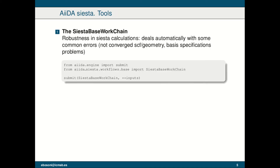This is, however, not the only feature of our plugin. In fact, we provide some tools that we think can be useful for anyone who wants to use SIESTA. The first one is the SiestaBaseWorkChain that adds robustness to SIESTA calculations. It is able to detect some common failures of SIESTA, like slow convergence of the geometry or the self-consistent field, or some basis specification problems, and then automatically deals with these problems.